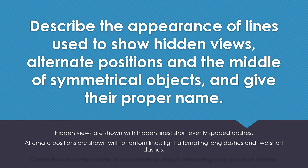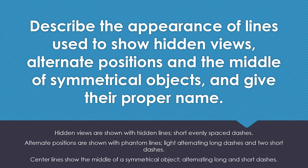Describe the lines used to show alternate positions and the middle of symmetrical objects. Alternate positions are shown with phantom lines, which are light alternating long dashes and two short dashes. Center lines are shown in the middle of a symmetrical object, alternating long and short dashes.